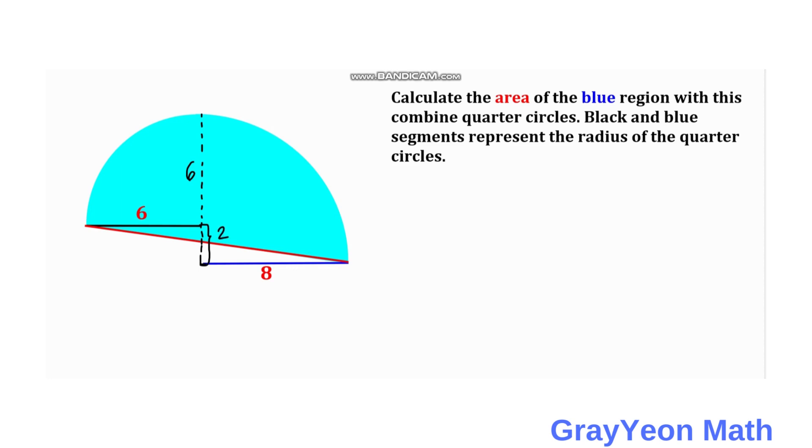Next, we label this distance as x and this other distance is 2 minus x, because the total is 2.